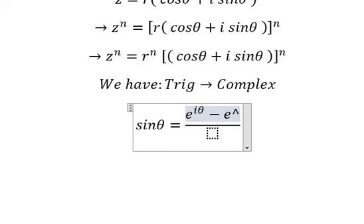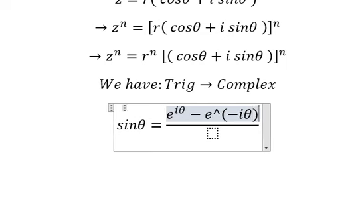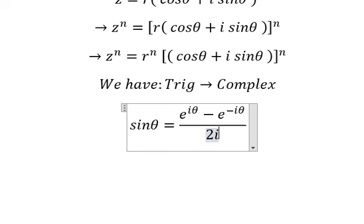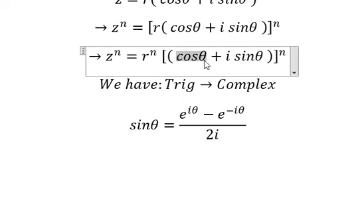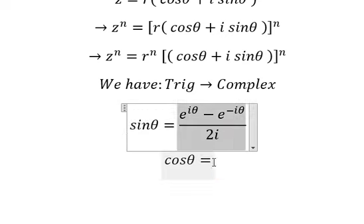And the next one, cosine θ, that is about this one, but we need to change this one into positive and no i in here. Now we go back in here.